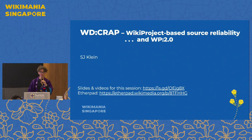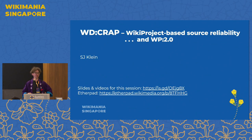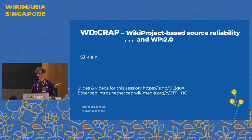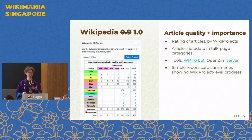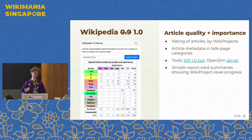I want to talk about CRAP for a minute. I don't know how many of you in the audience have interacted with the Wikipedia 1.0 project. It's very federated, very decentralized — wiki project by wiki project. People go through and assess individual articles in the categories that their project cares about with regards to their importance and their quality.